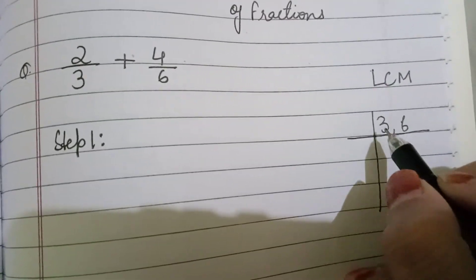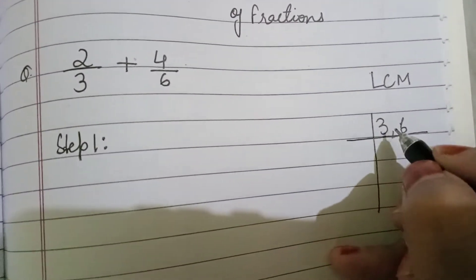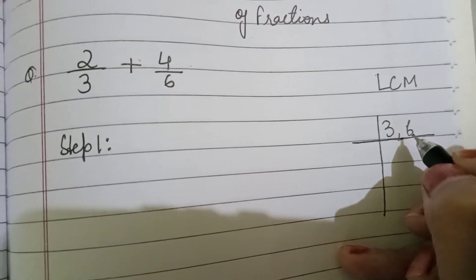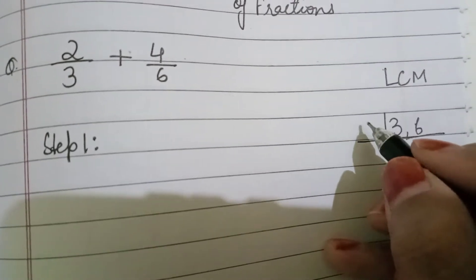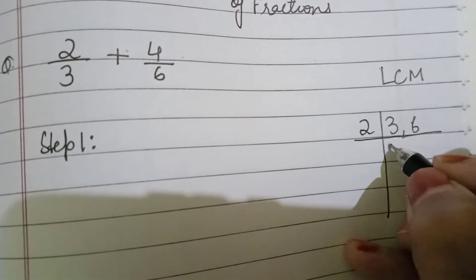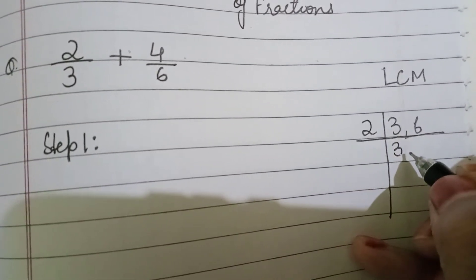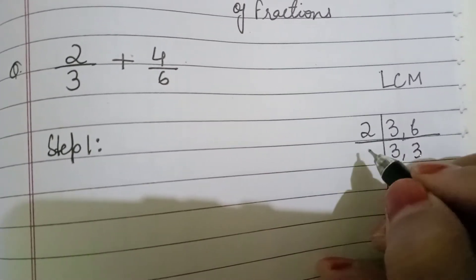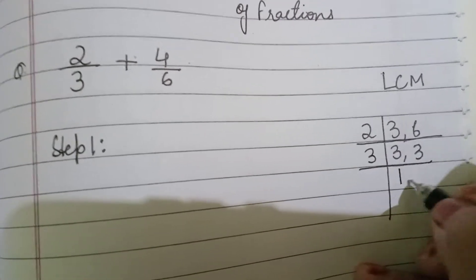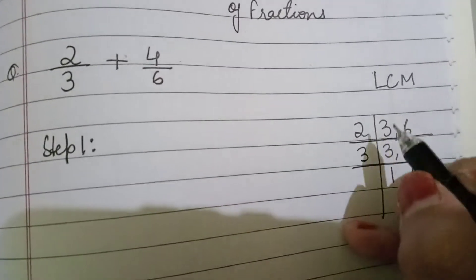So first we will take out the LCM of 3 and 6. See, there is 6, so you cannot start directly with 3. You have to start with 2. So we will put this as it is. And 2, 3's. And then 1 and 1.